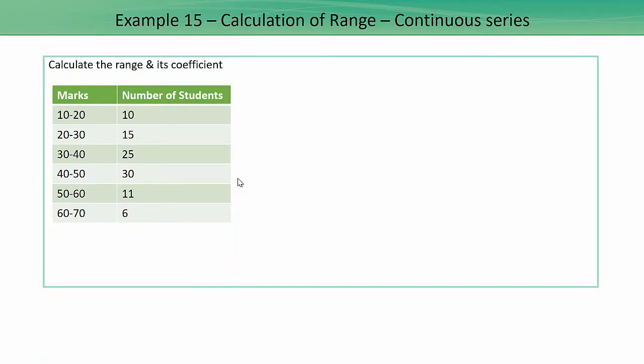We'll now calculate the range and its coefficient for a continuous series. When given a continuous series, first check if it is an exclusive distribution. If not, convert it into an exclusive distribution. In this example, we've already been given an exclusive distribution, so we move directly to the formula.